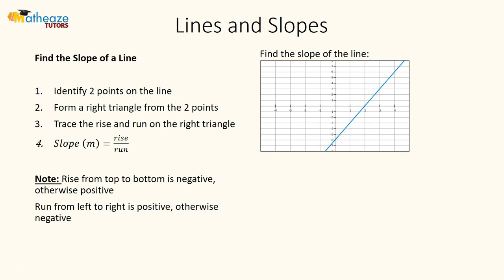Let's look for two points on the line. I'm going to pick this point right here and this point right here. Now we're going to form a right triangle — I'm going to draw a line here and a line down here. We'll have a right triangle, and then we're going to trace the rise and the run.